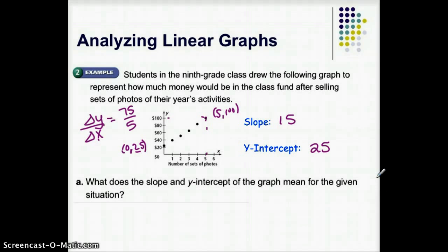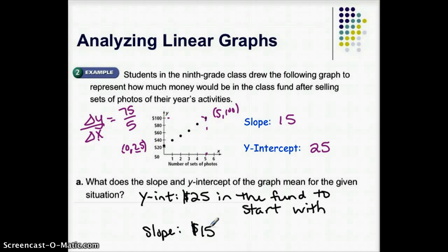So I'm going to ask you to answer two questions on this, and I want the real-world answers. So what does the slope and the y-intercept of the graph, what do those mean in terms of this situation? Try to answer that, then come back and check. Okay, so I hope you say, let's start with the y-intercept. The y-intercept of 25 means that they had $25 in the fund to start out with. So before they even sold any photos, there was $25 in the fund, the beginning of the year or the beginning of the fundraiser, or whatever it was. Okay, and then the slope is $15. That means that it's $15 for each set of photos. So that's how much they're making for each set of photos. $15, I'll write made for each set of photos.